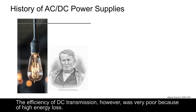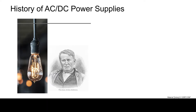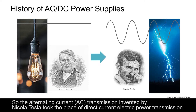The efficiency of DC transmission, however, was very poor because of high energy loss. So the alternating current, AC, transmission invented by Nikola Tesla took the place of direct current electric power transmission.